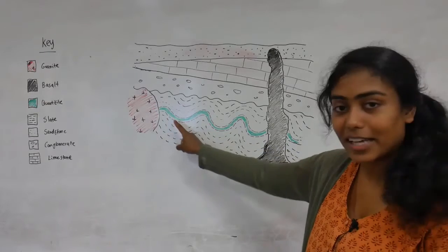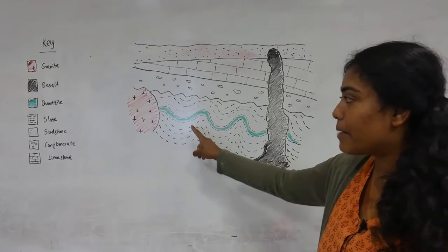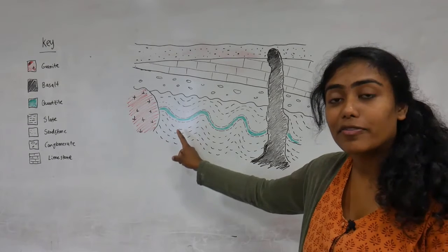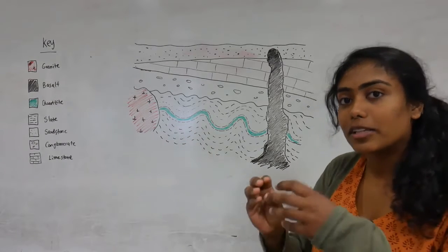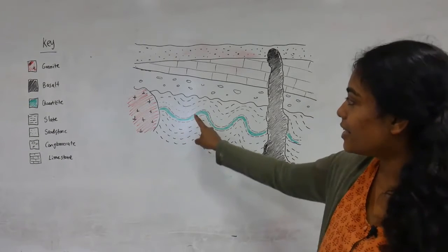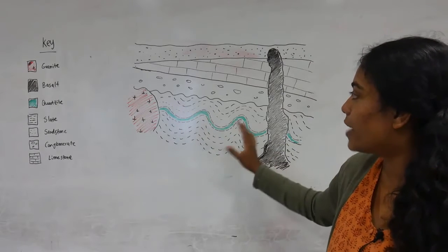Then we have this quartzite layer that might have started off as a sandstone with lots of quartz clasps in it, and then we have more mudstone on top of that.